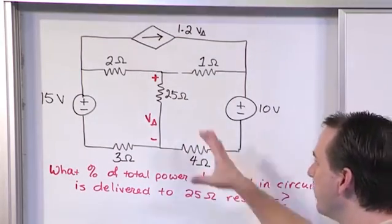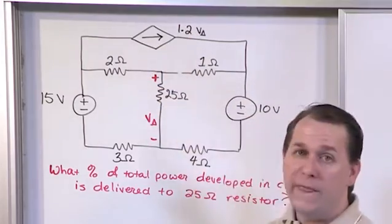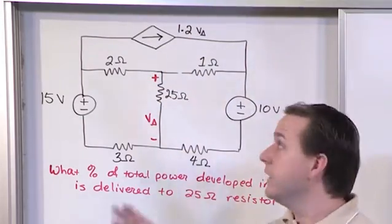So once we turn it on, whatever the voltage is here, that number times 1.2 is going to dictate what the current is flowing in the top of that circuit up there.